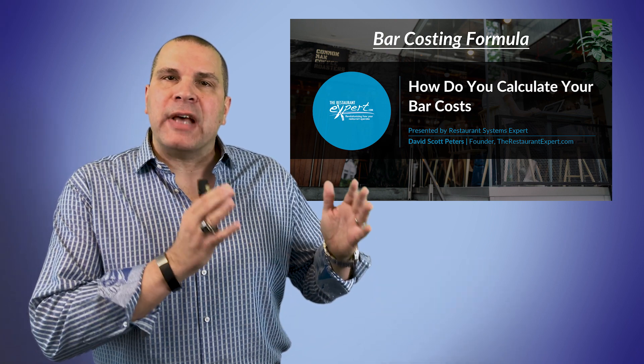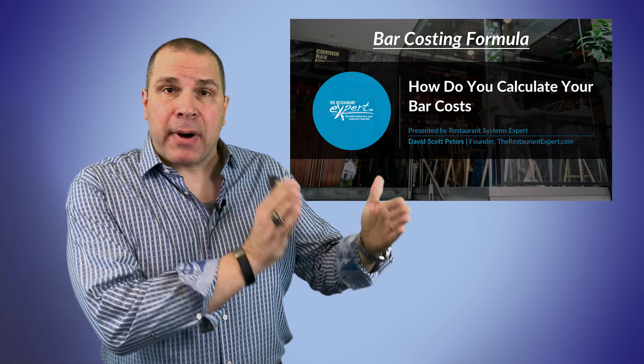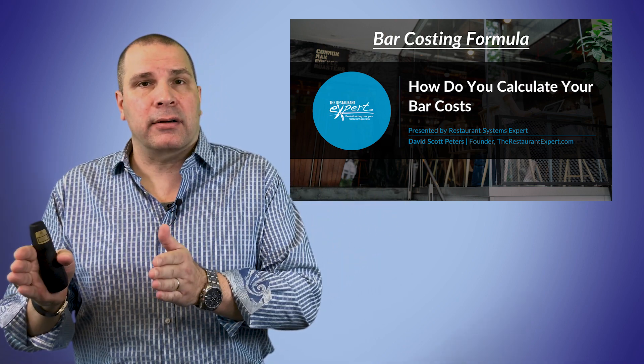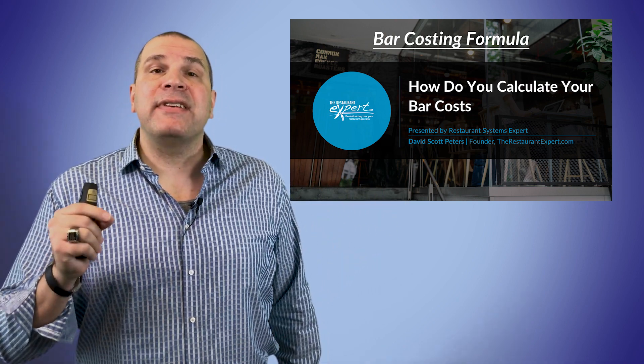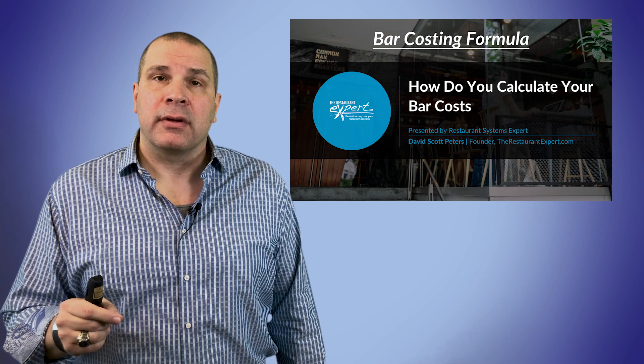First of all, make sure you separate by sales category: bottle beer, draft beer, wine, liquor. They have different pour cost targets.